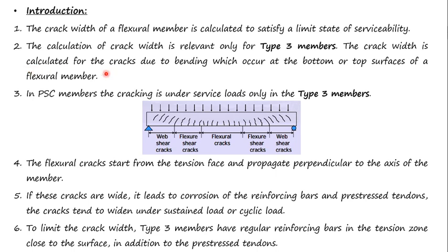The crack width is calculated for the cracks due to bending which occur at the bottom or top surfaces of a flexural member. In PSC members, cracking under service loads occurs only in type 3 members. There are three types of cracks: flexural cracks, flexure-shear cracks, and web shear cracks.